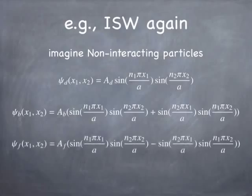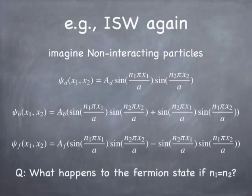For fermions, you have to construct the wave function so that when you swap x1 and x2 — the positions of the two particles — you get the same wave function back but with a minus sign. The second term has a minus sign, and that enforces the anti-symmetry requirement that fermions must satisfy. What happens to a fermion state if n1 equals n2? I'll let you think about that — look at the expression and see if you can figure it out, and maybe we can talk about it in class.